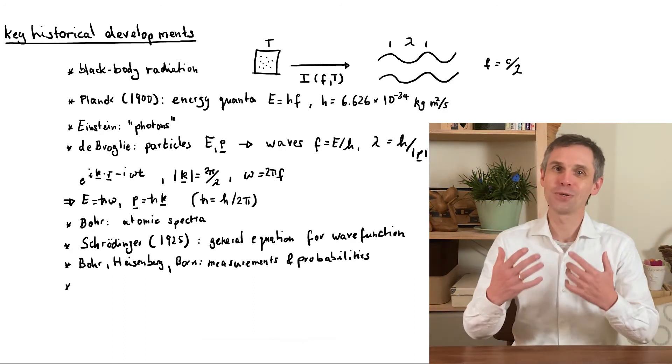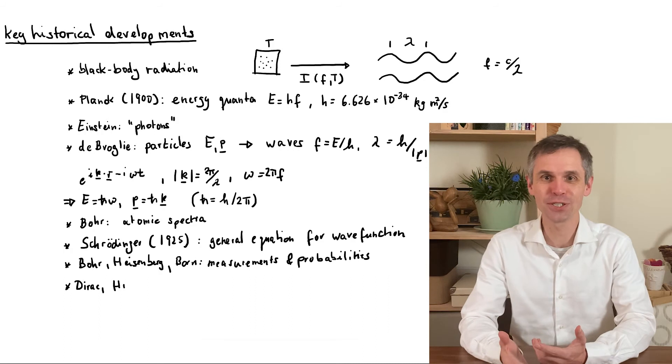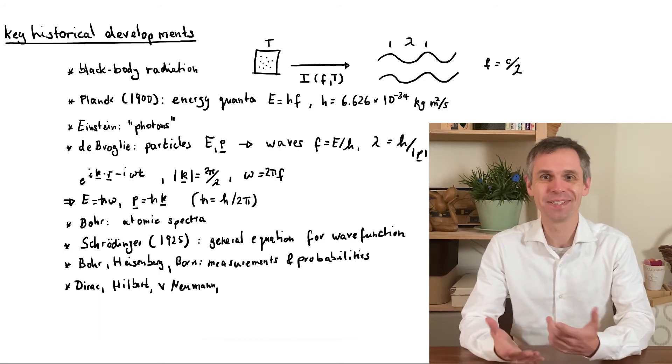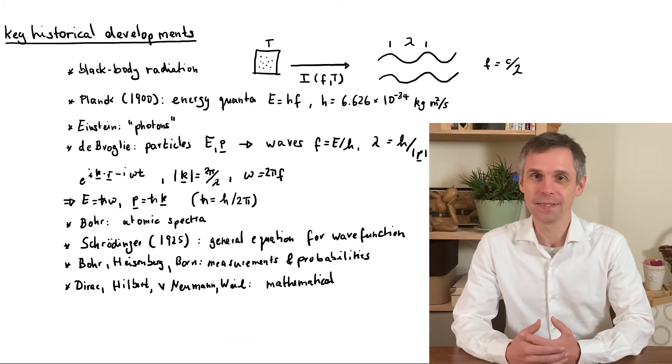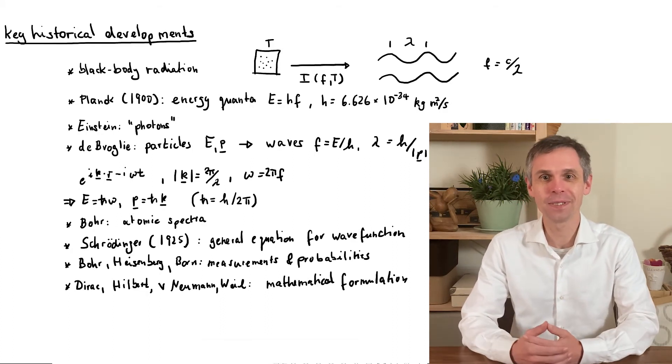The theory owes its present mathematical formulation to people such as Paul Dirac, David Hilbert, John von Neumann and Hermann Weil.